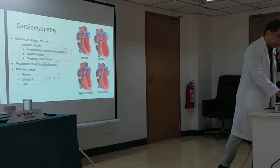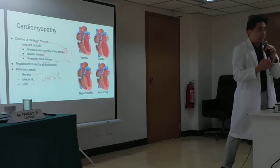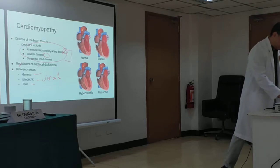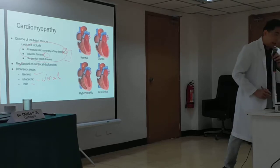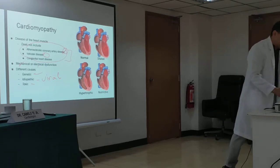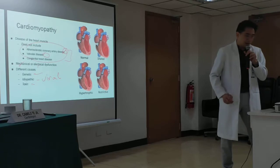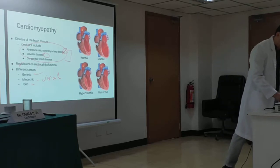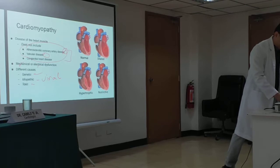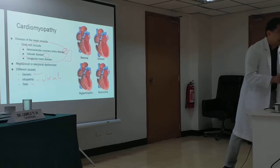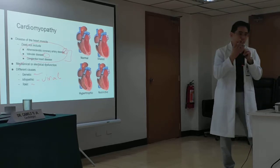This is a normal heart — you can see the heart muscles here. When you have a dilated cardiomyopathy, dilated means enlarged, so the cavity is bigger and the heart muscle becomes thinner compared to the normal. When it's hypertrophic, the muscles thicken — that's hypertrophic cardiomyopathy.